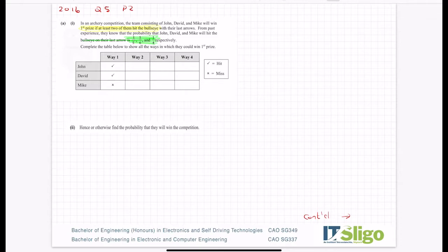So the probability that John hits is a fifth. The probability therefore that John not hits must be four-fifths, because probability always has to add up to one. He either hits that bullseye or he doesn't. The probability that David hits is a sixth. The probability that David not hit is five-sixths. Again, has to add up to one.